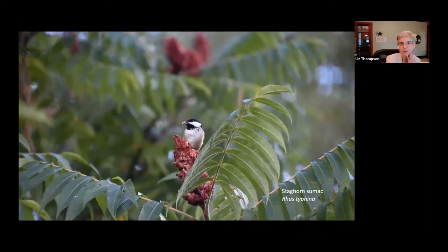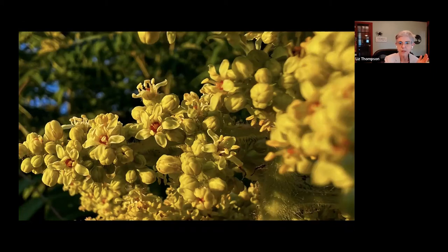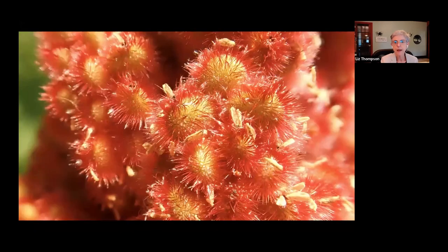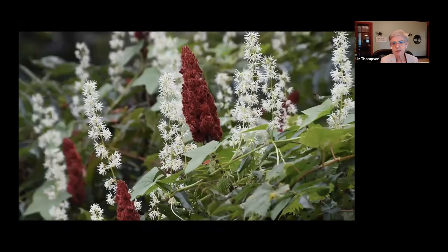Now we're looking at staghorn sumac, which grows commonly on roadsides. This is actually a fall photo, but it's really important wildlife food — here's a chickadee eating the fruits of staghorn sumac in Mills Riverside Park in Jericho. Going back seasonally a couple of weeks: these are actually the male flowers of staghorn sumac. If you look at a group of staghorn sumac, they're either male or female — the male ones have yellowish clusters of flowers before you see the female cones. Looking closer you can see the stamens, and here's the close-up of the female cones with their hairy fruits. There are also some stamens in the female picture — so functionally dominant male and dominant female, but not purely so.